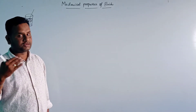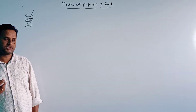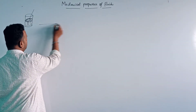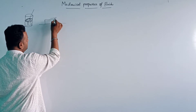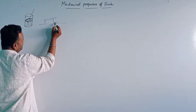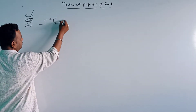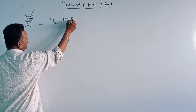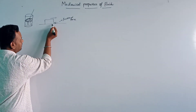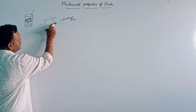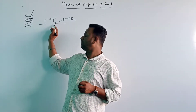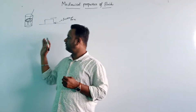Let me give another example. If I take a solid body and slide it over a horizontal surface, one force will always act in the opposite direction — that force is called a frictional force. It always opposes the body's motion, decelerating it. Some force of friction develops between the body and the horizontal surface. The same way, a liquid also has a frictional force.